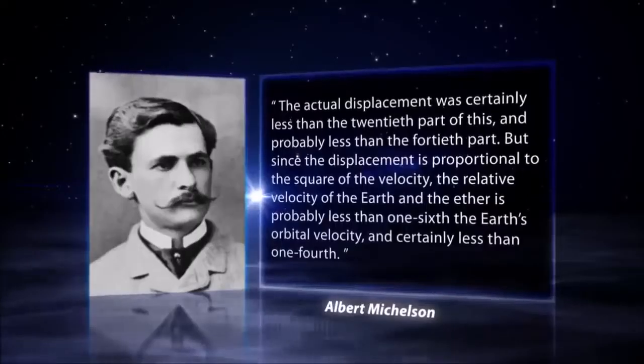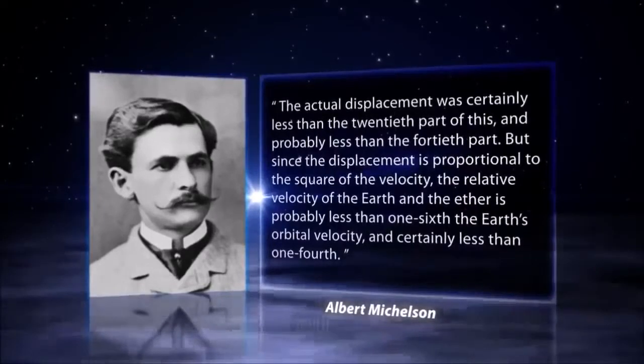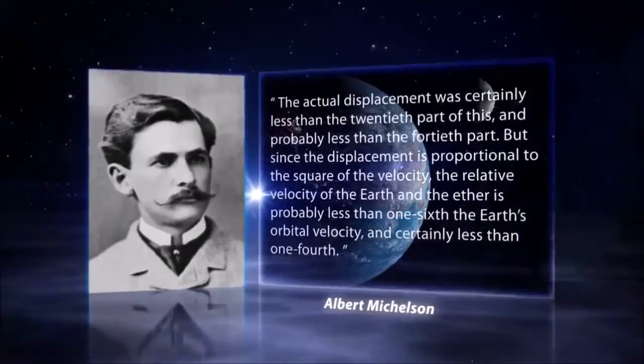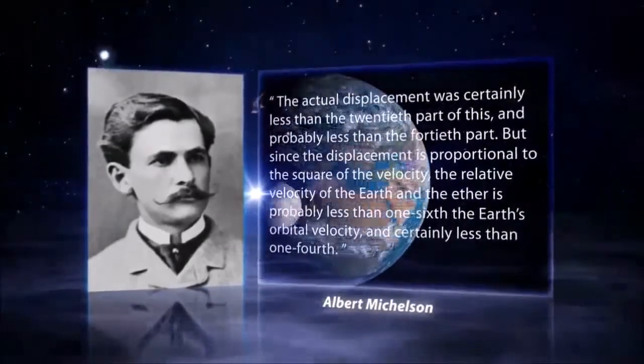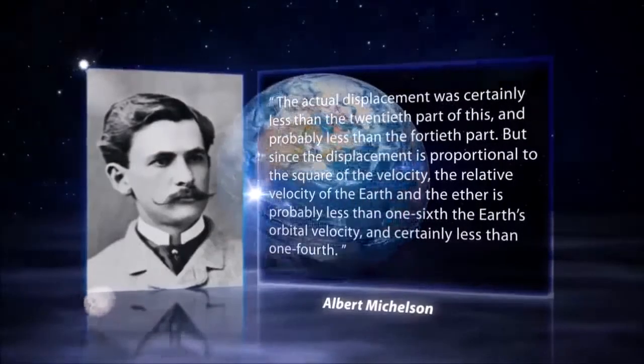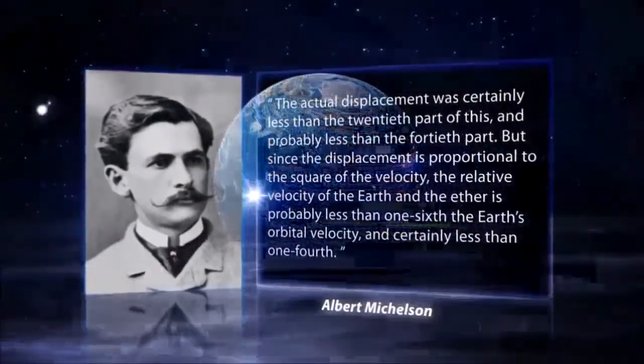Michelson noted this small presence on his 1887 paper. However, the actual displacement was certainly less than the twentieth part of this, and probably less than the fortieth part, but since the displacement is proportional to the square of the velocity, the relative velocity of Earth in the Aether is probably less than one-sixth of the Earth's orbital velocity, and certainly less than one-fourth.